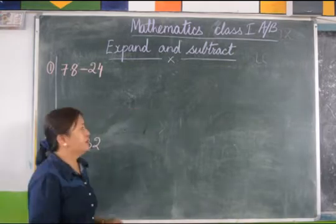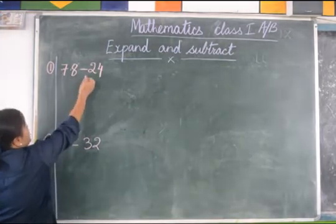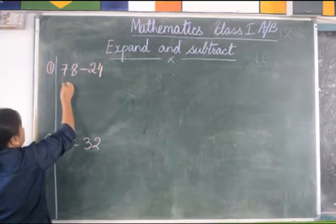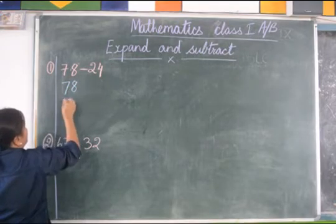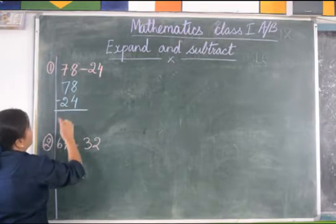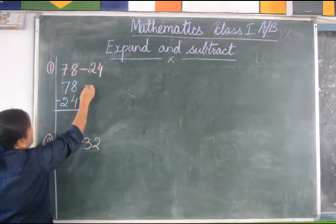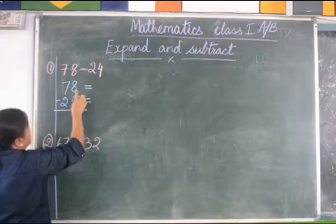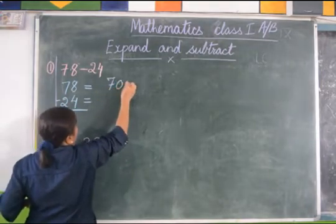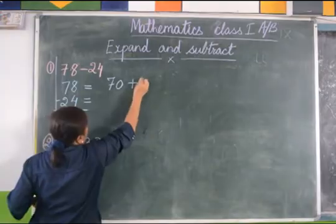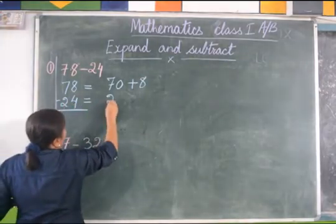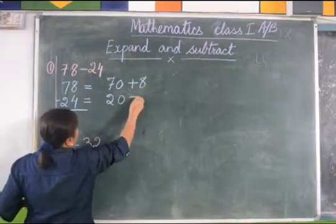For example, 78 minus 24. We will arrange this number in the vertical line: 78 minus 24. Now we are going to expand this number. 78 is written as 70 plus 8. 24 is written as 20 plus 4.